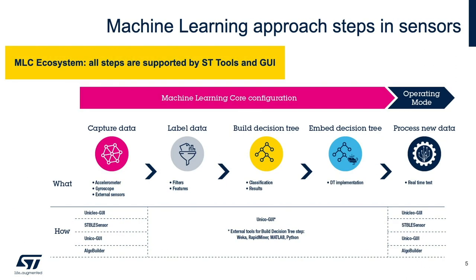These are the main steps needed in order to realize a fully working solution based on machine learning. The first step is data collection, and we are going to do that using the ProfiMAMS board together with Unico GUI. After data have been collected and labeled, we will extract features and, if needed, apply filters. Unico GUI will help us during this step.